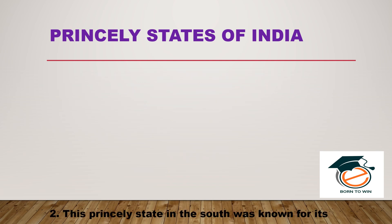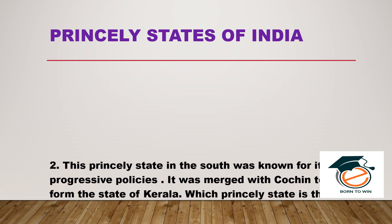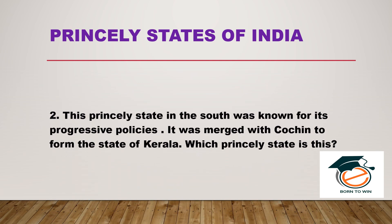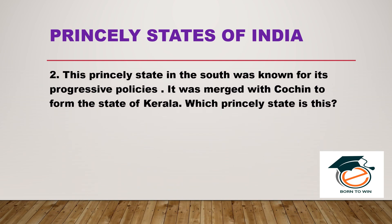This princely state in the south was known for its progressive policies. It was merged with Cochin to form the state of Kerala. Which princely state is this? Answer: Travancore.